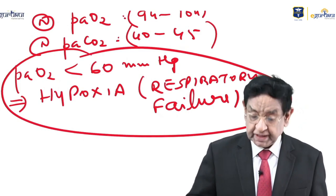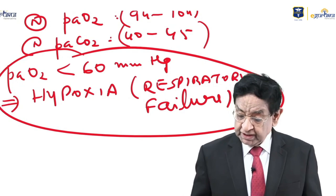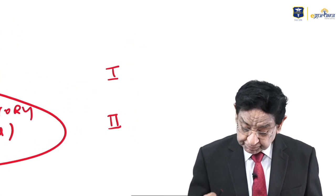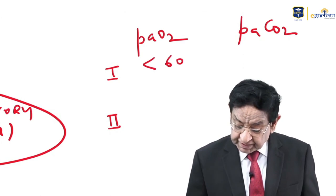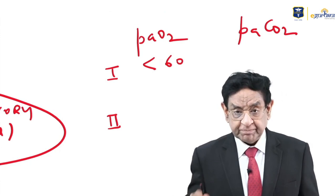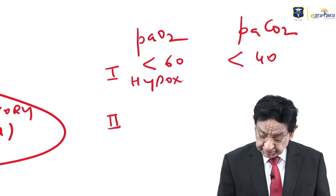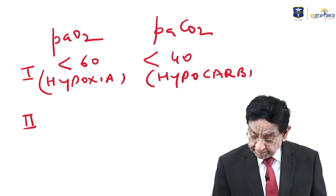This is a very important golden line to remember: when the partial pressure of oxygen goes down, we call it respiratory failure or hypoxia. We have two types of respiratory failure — Type 1 and Type 2. In Type 1, PaO2 is less than 60 mmHg and PaCO2 is less than 40 mmHg, meaning there is hypoxia and hypocarbia.